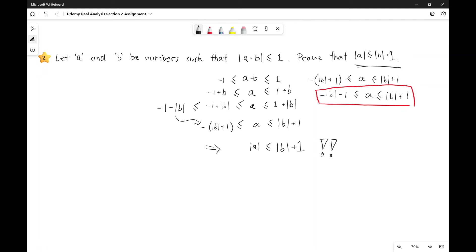Alright, so that simplifies down to that. And we can get rid of this. Right? And then that implies this: that the absolute value of A is less than or equal to the absolute value of B plus 1. So yeah, that's how I would do it.